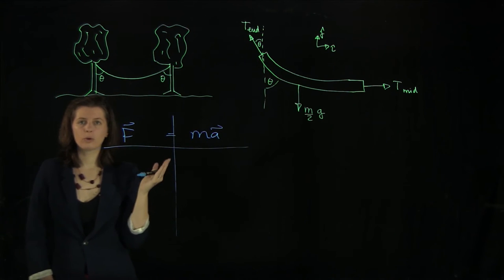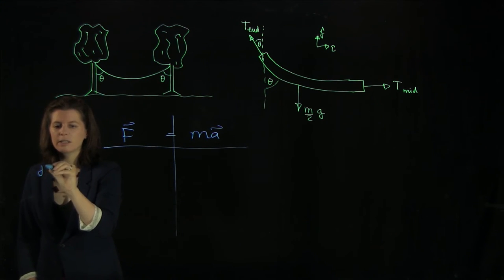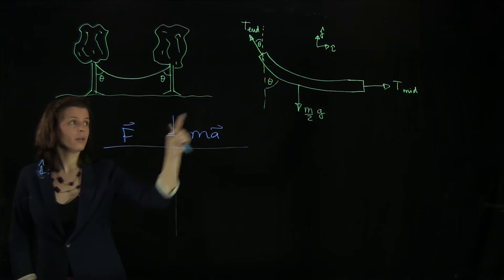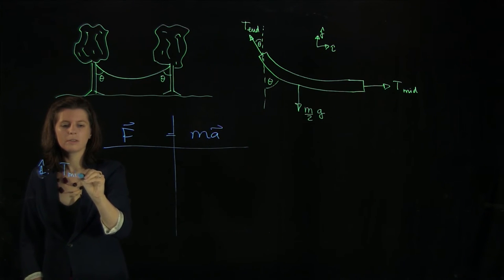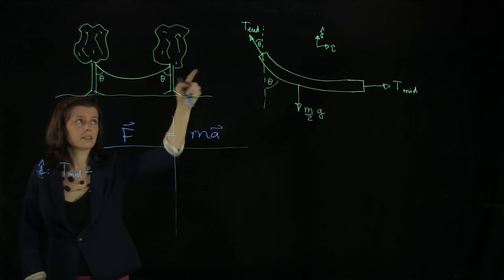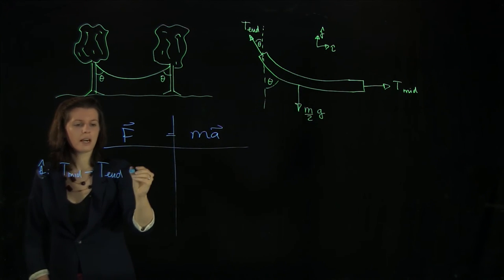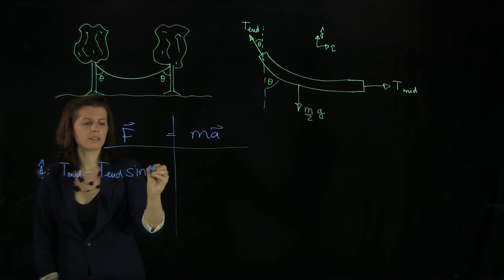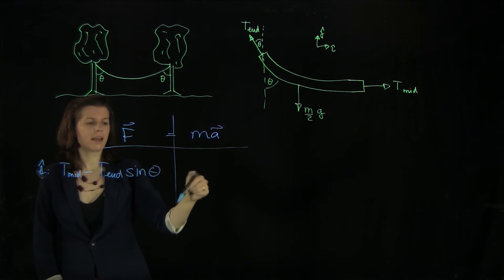And we'll have to very carefully separate the components here. Let's start with i hat. We have T mid minus T end. But of course, we have only the projection of T end. So this is T end sine theta. And since this rope is just hanging there, the acceleration is 0.